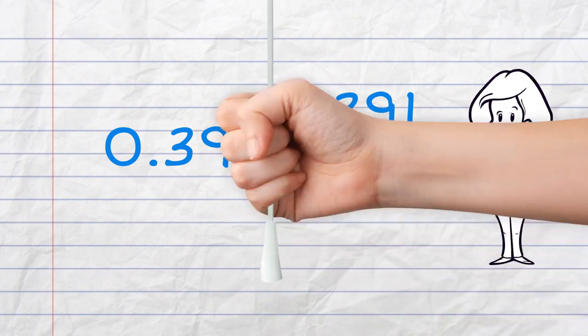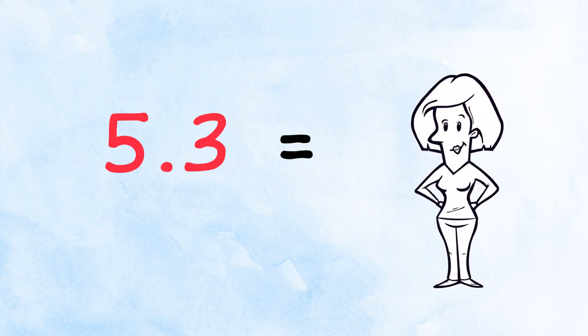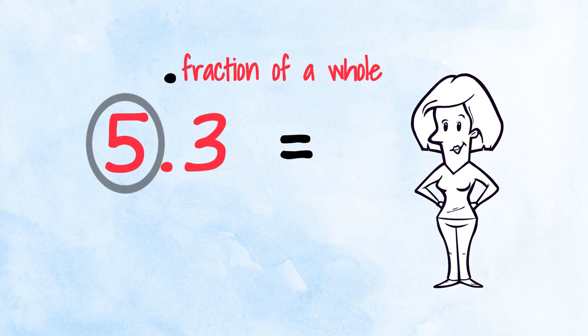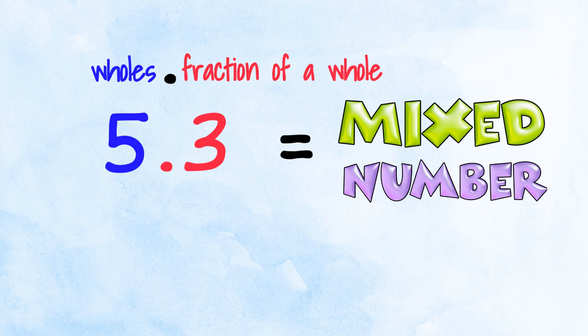What about this number? 5.3. Well, we know what to do with the decimal part. But how about that 5? Remember, to the right of the decimal point are fractions of a whole one. And to the left of the decimal point, you've got whole numbers! It's a whole number and a fractional part. This value is going to be a mixed number.